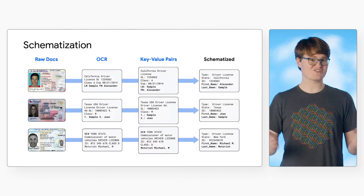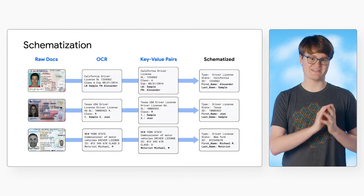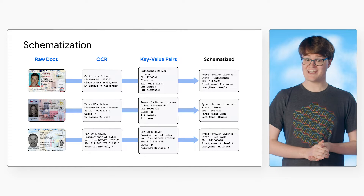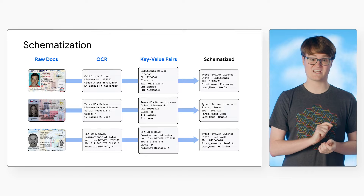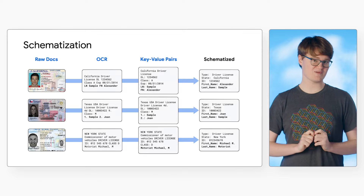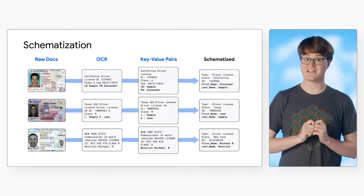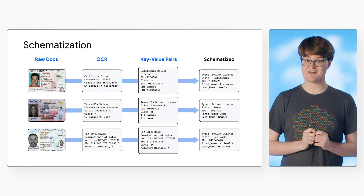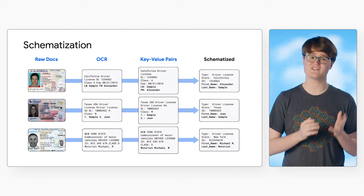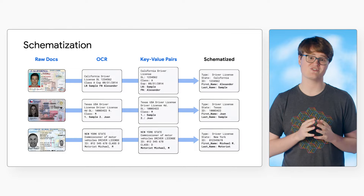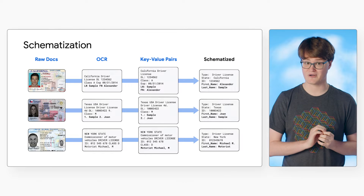Previously, we looked at Document AI specialized processors and how they can provide intelligent insights into certain document types by providing consistent schemas and normalizing data to reduce the amount of pre and post processing you need to perform.